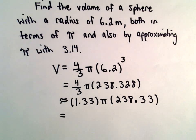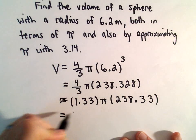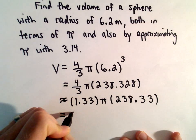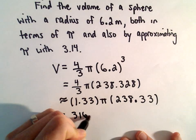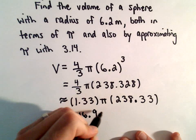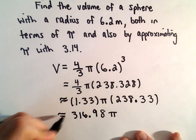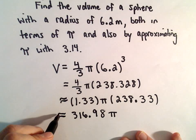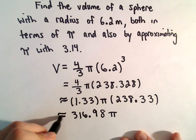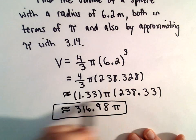So 1.33 times 238.33, I'm getting, again I'm going to round, so 316 point 9, I'm getting 978. So I'm going to make that 98 and then we can multiply that by pi. So I'm going to make my little equal signs a little curvy just to indicate that we're approximating. So that would be our solution in terms of pi.